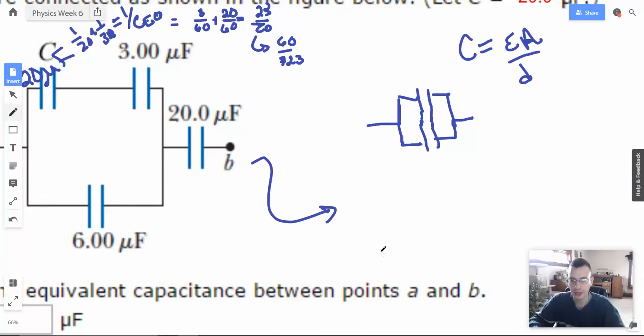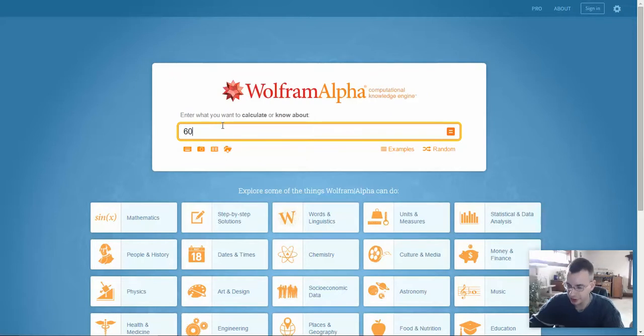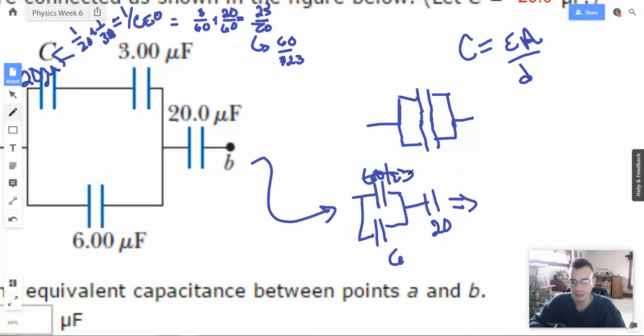So we redraw this, and then we have parallel coming together with a 20. 60 over 23 and 6, and then this guy will be a 20. So these two are in parallel, so we'll just add them. 60 divided by 23, heck with fractions, is 2.6. So we add them together, and we get 2.6 plus 6 is 8.6. We get ourselves a 20. And then we're going to draw it one more time.